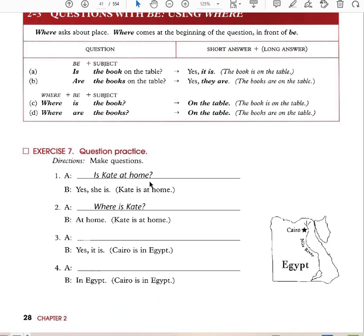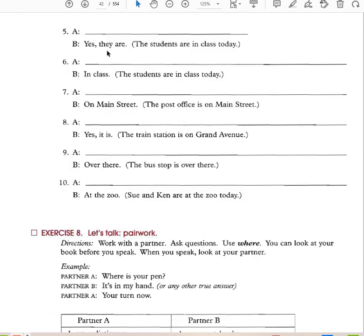Is Kate at home? Yes, she is. Where is Kate? Is Cairo in Egypt? Yes, it is. Are the students in class today? Yes, they are. Where are the students? In class. Where is the post office? On Main Street. Is the train station on Grand Avenue? Yes, it is. Is the bus stop over there? Yes, it is. Where are Sue and Ken? At the zoo. Where is the bus stop? Over there.